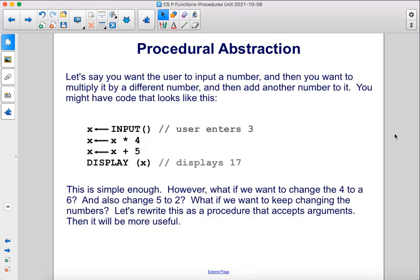Let's say you want the user to input a number and then you want to multiply it by a different number and then add another number to it. You might have code that looks like this. X equals input where the user can enter, let's say, 3.